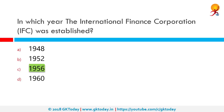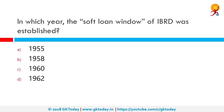The IBRD provides loans to governments and public enterprises always with a government or sovereign guarantee of repayment. In which year was the soft loan window of IBRD established? A soft loan is a loan with a below-market rate of interest, also known as soft financing, sometimes providing concessions such as long repayment periods or interest holidays. The soft loan window of IBRD was established in 1960.